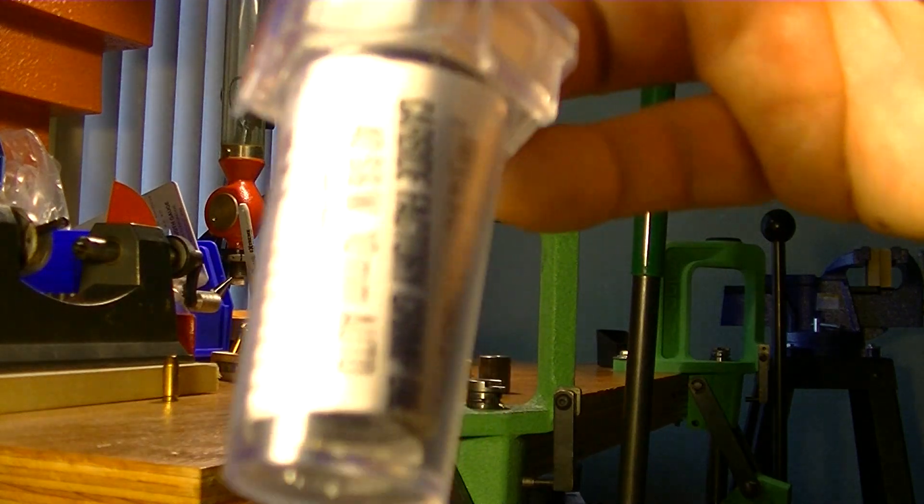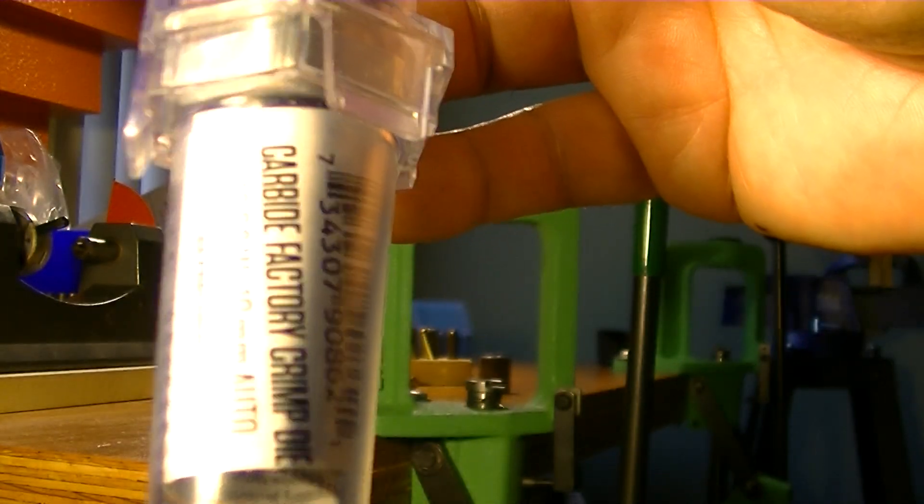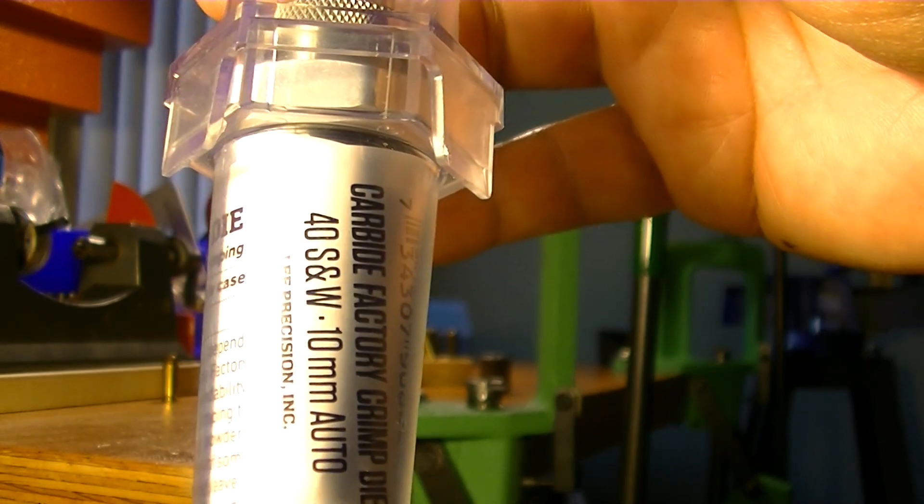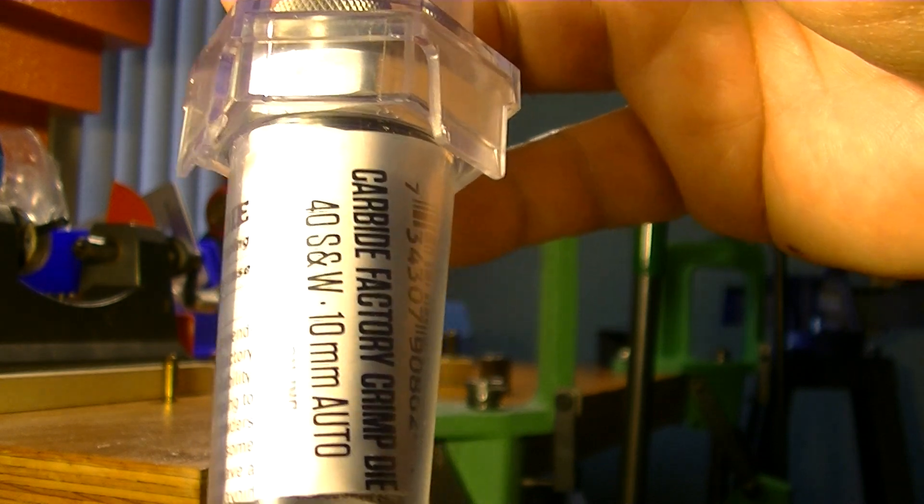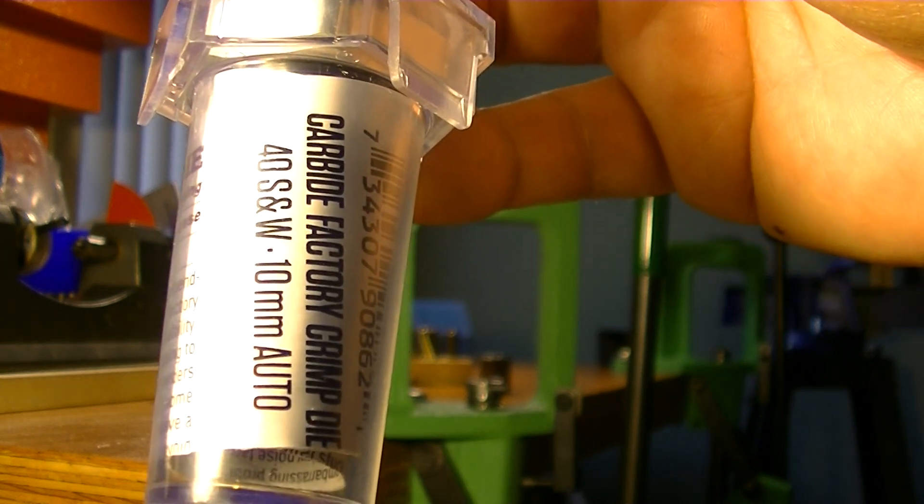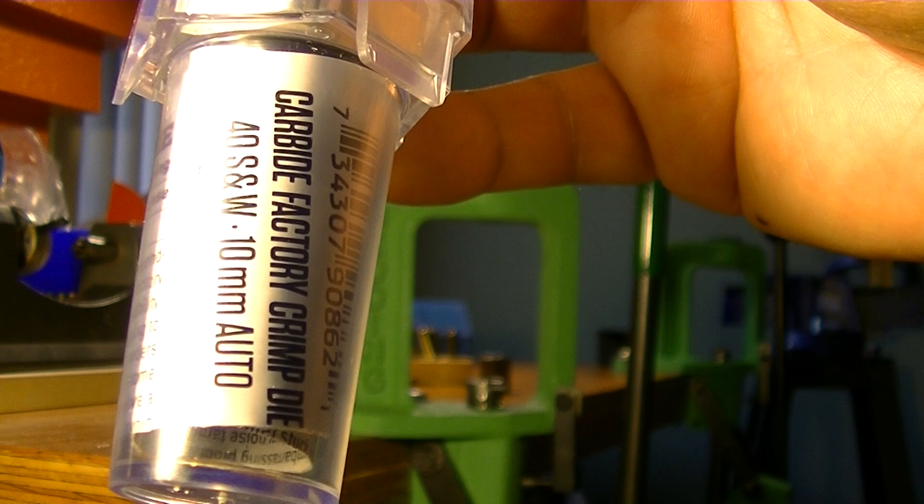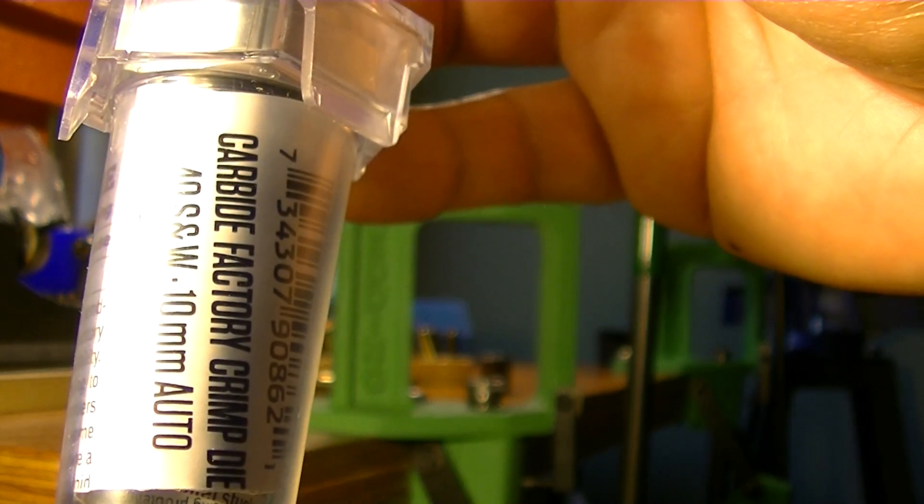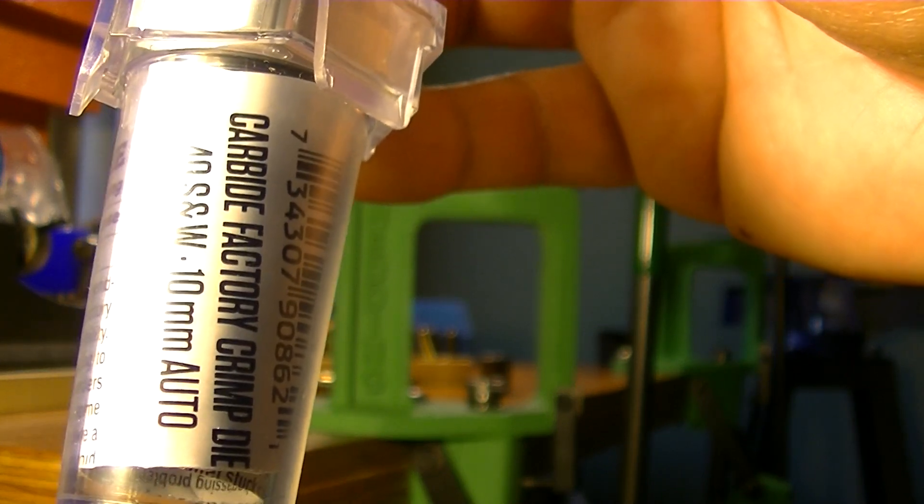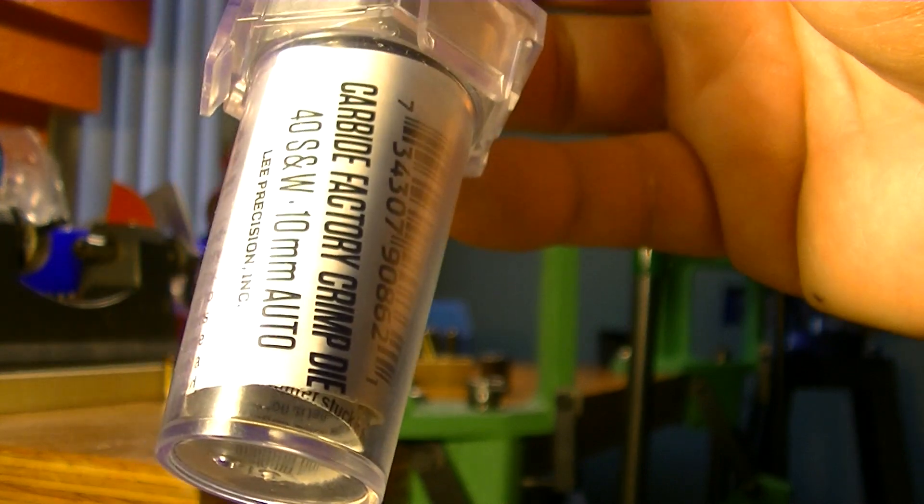Plus I bought a carbide factory crimp die in 40 cal from Lee also. Now you need both of them to make this happen. The total cost including shipping was approximately $40. So let's give it a try.